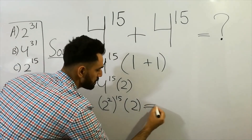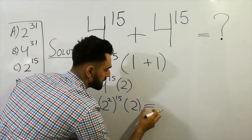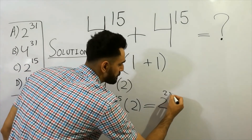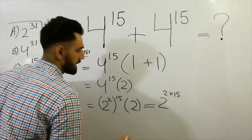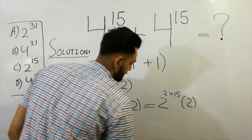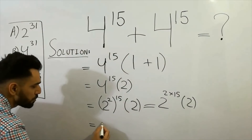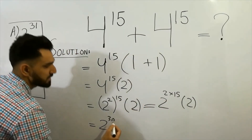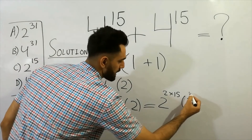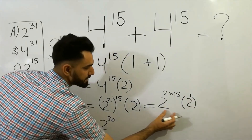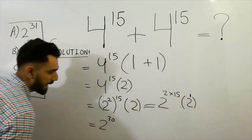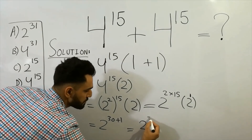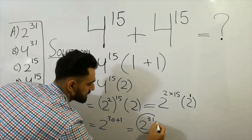The next value: fifteen multiplied by fifteen — you can write two multiplied by fifteen. Next: two stays as it is, and two raised to power fifteen twos are thirty, with this value being one. Since the base is the same, the powers add: thirty plus one gives us two raised to power thirty-one. That is the right answer.